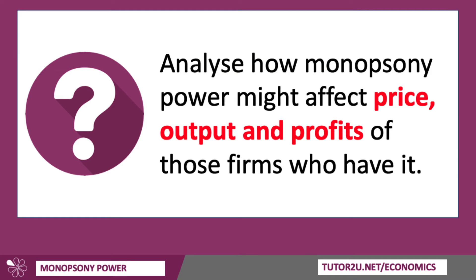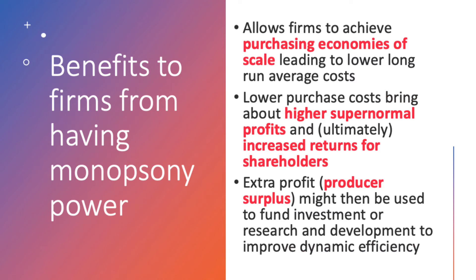How can we use analysis to show how monopsony power affects price, output and profits? Thinking about the consequences: don't be afraid to use concepts from your Year 12 studies in economics — producer surplus, for example. Monopsony power in theory allows firms to achieve purchasing economies of scale, which reduces their long-run average costs.